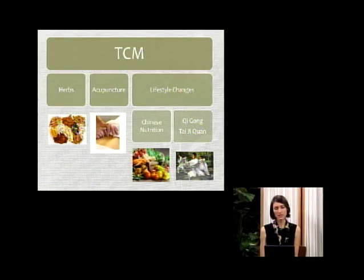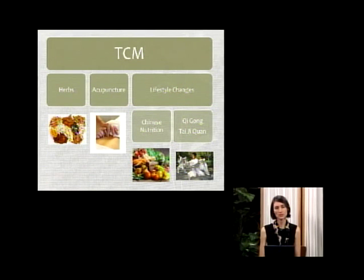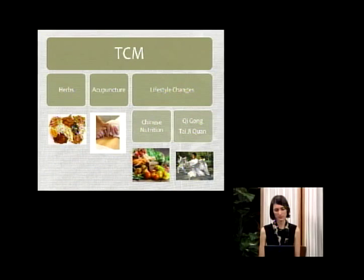Acupuncture is not just the insertion of needles into the body; we use several different therapeutic means to stimulate acupuncture points. In addition to needles, we use things like cupping, moxibustion, laser acupuncture, electric acupuncture, and a kind of massage called tuina or acupressure. Lifestyle changes are also a very important part of traditional Chinese medicine, as diet and exercise play major factors in influencing your health.